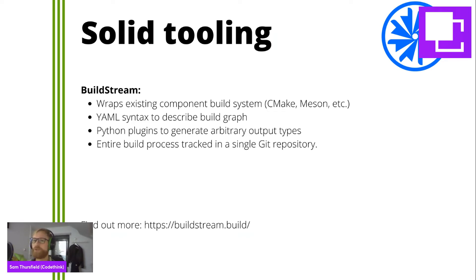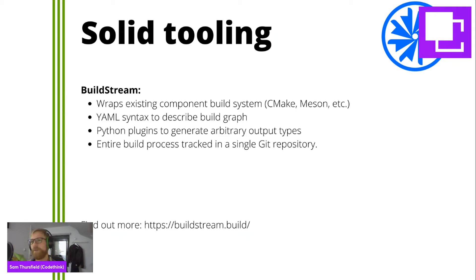Apart from that, BuildStream uses a YAML syntax to describe the build instructions. You can write plugins in Python to help you generate different types of output — for example, Docker images. And the whole process is tracked in a single Git repository, which makes it nice and easy to manage with GitLab.